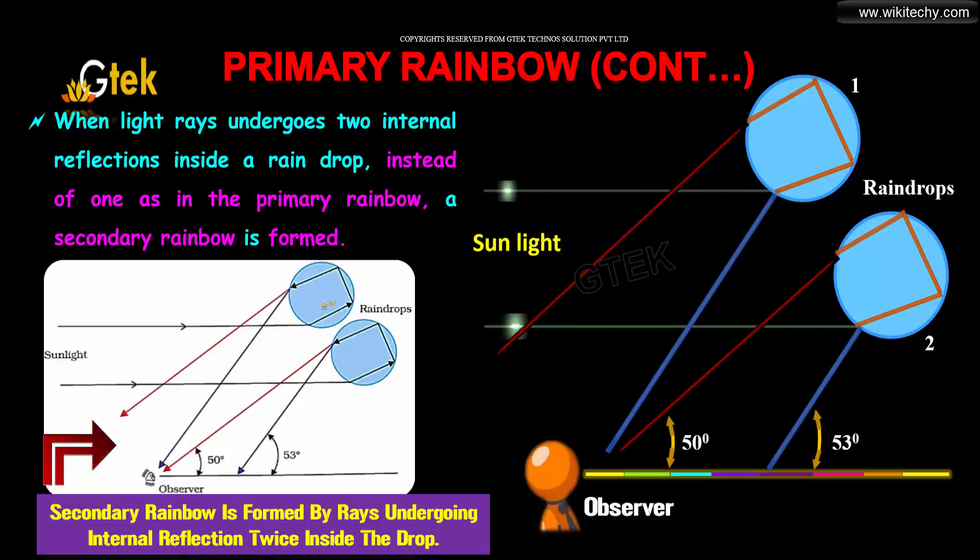The secondary rainbow is formed by rays undergoing internal reflection. You can see the sunlight coming in and undergoing internal reflection, forming the secondary rainbow.